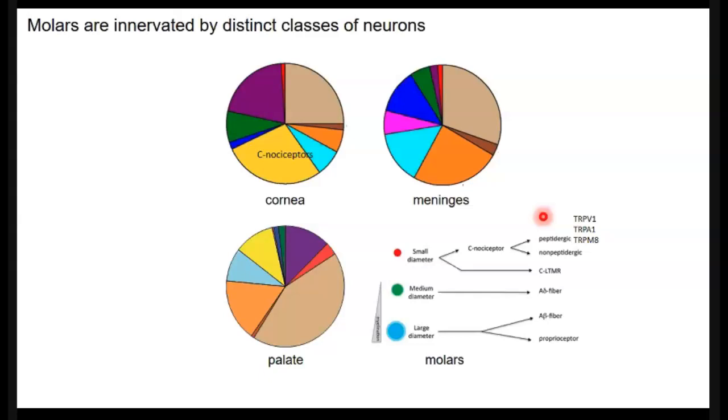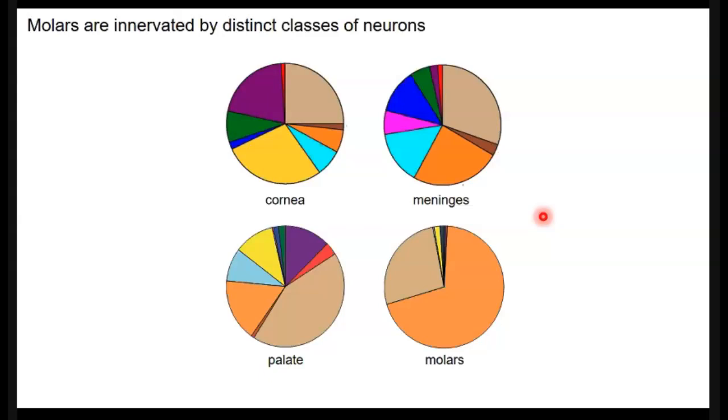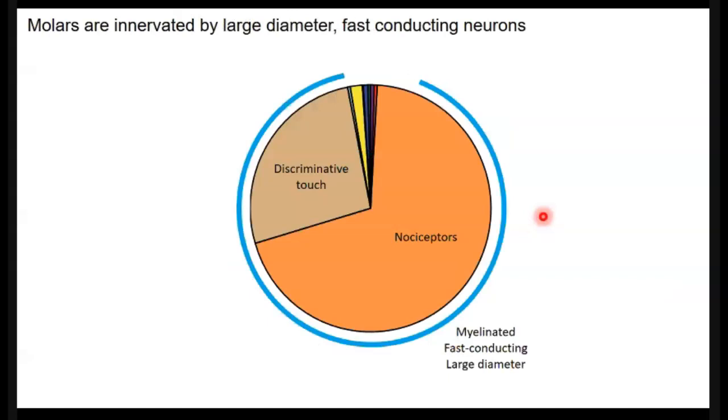But to my delight, that's not what we found at all. The innervation of the molars seems to be much simpler. That's not to suggest it isn't remarkable. I think what's remarkable is that the transcriptomes of these neurons suggest they aren't small at all. Instead, the data indicate that the neurons are myelinated, or likely to be myelinated, fast-conducting, and large diameter. And that's indicated by this blue region. And so this size is consistent with what I showed previously in the imaging. When I look closer at these two classes, the majority are nociceptors, but not the kind that we've discussed. So very few of the pain-sensing neurons are the small C-fiber type.